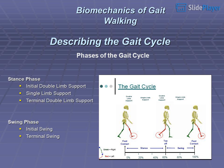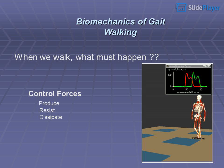Phases of the gait cycle: the stance phase includes initial double limb support, single limb support, and terminal double limb support. The swing phase includes initial swing and terminal swing.